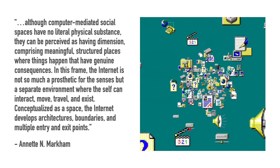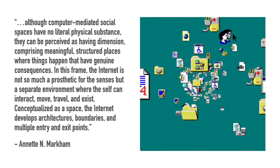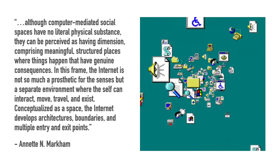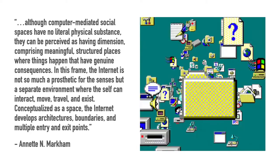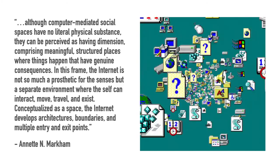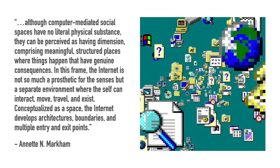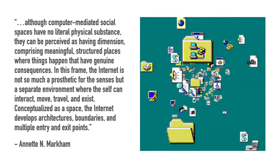Annette Markham wrote a lot about internet metaphors and describes this phenomenon very well. She writes: 'Although computer-mediated social spaces have no literal physical substance, they can be perceived as having dimension, comprising meaningful, structured places where things happen that have genuine consequences.' In this frame, the internet is not much a prosthetic for the senses, but a separate environment where the self can interact, move, travel and exist — conceptualized as a space with architectures, boundaries, and multiple entry and exit points.